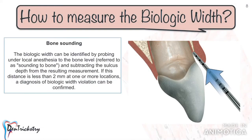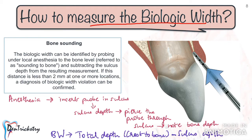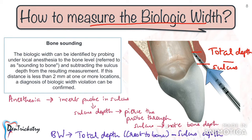The answer is bone sounding. Bone sounding is a way to measure the biologic width. First, anesthetize the area and insert your periodontal probe in the sulcus — note the sulcus depth. Then force that periodontal probe through the sulcus until you reach the bone and note this depth also. Subtract the sulcus depth from the depth obtained by reaching the bone, and that is your biologic width. If it is less than 2 millimeters, you have probably violated the biologic width.